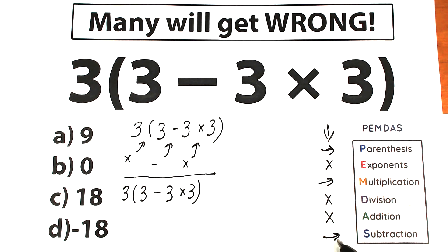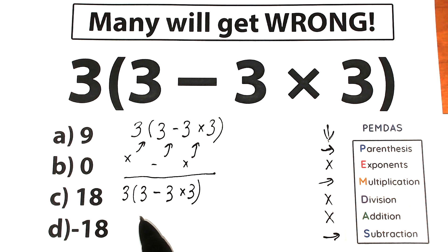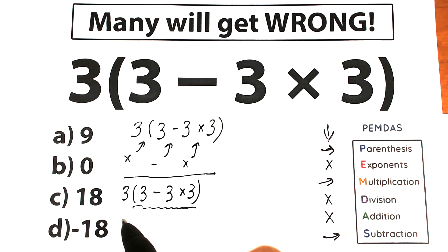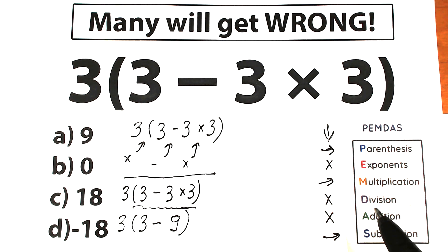Higher position means higher priority. First we identify the parenthesis, then we evaluate inside. Our second step is multiplication: inside the parenthesis we have 3 minus 3 times 3. We multiply first: 3 times 3, which equals 9. We complete our second step — multiplication.